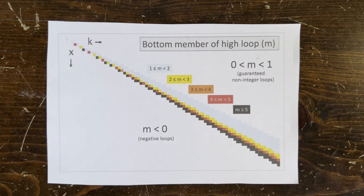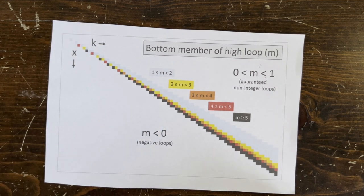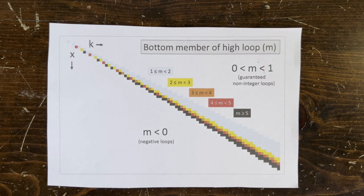The light blue cells have m between 1 and 2. Yellow cells have m between 2 and 3. Black cells have m bigger than 5.